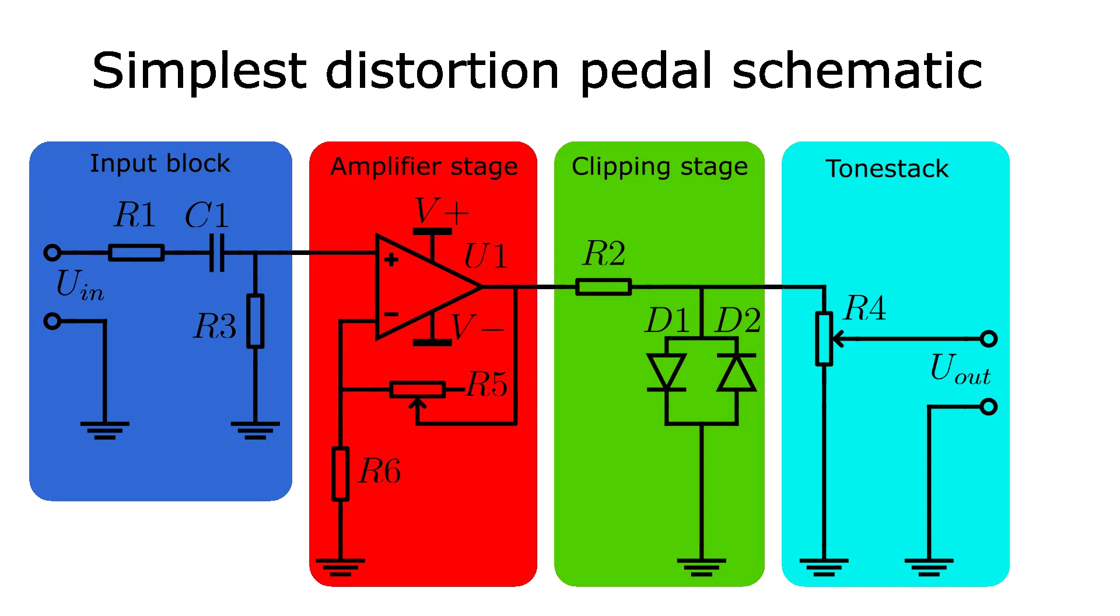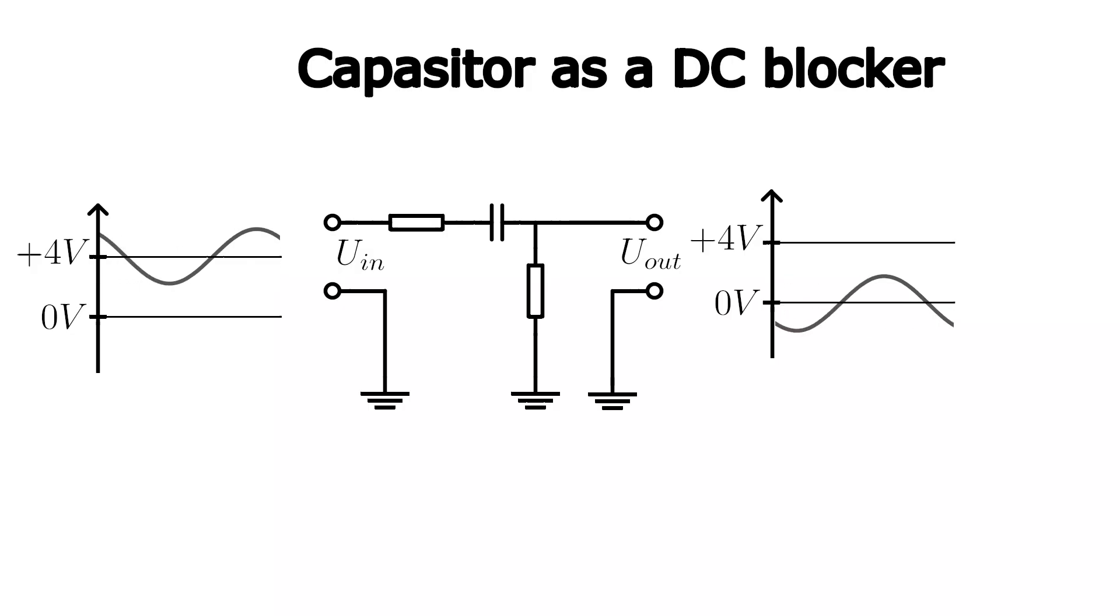Let's take a closer look at each of these blocks. The input block has two key purposes. Firstly, it removes any DC component from the guitar signal. And secondly, it limits the current flowing through the circuit. The input stage consists of a capacitor and two resistors: R1 for current limiting and R2 is a pull-down resistor that establishes potential of the ground and pulls the signal line down to it, which helps to prevent it from floating or picking up noise. This is a commonly used reception where a clear signal level is important or we have a virtual ground potential.